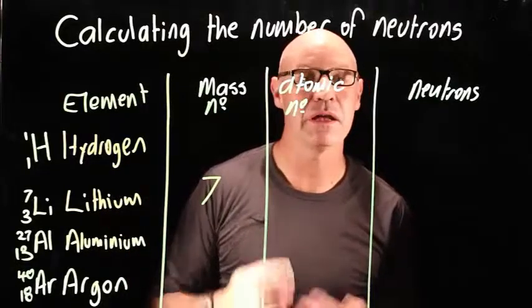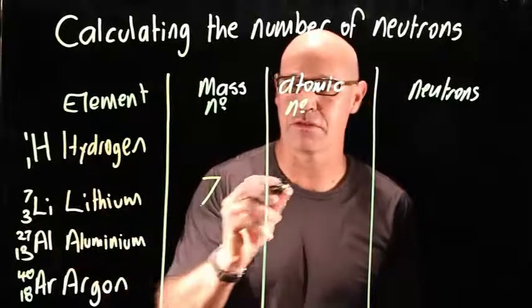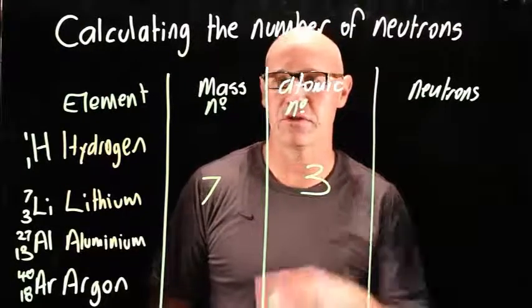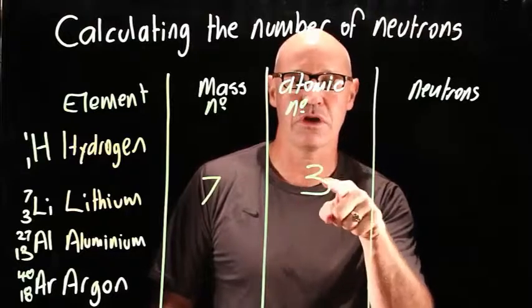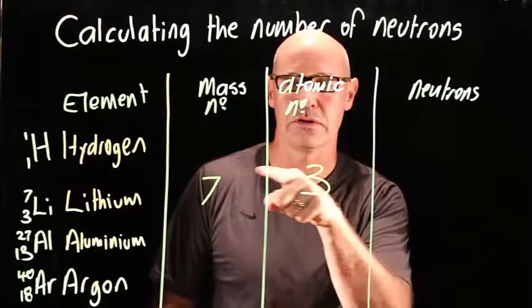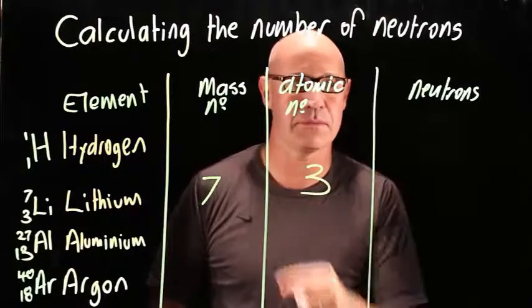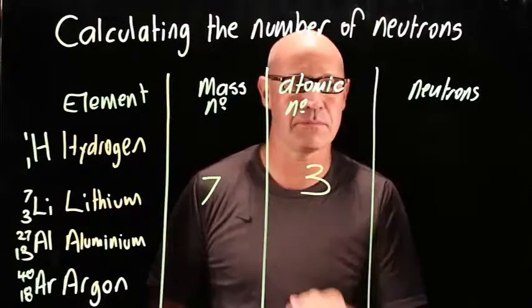An atomic number, number of protons, is 3. The mass number is the number of protons plus the number of neutrons. So if we know we've got 3 protons, 7 take 3, that means we must have 4 neutrons.